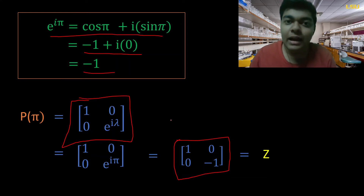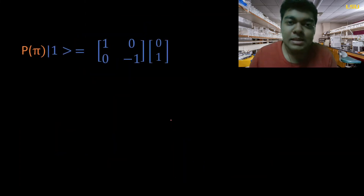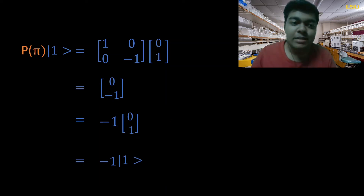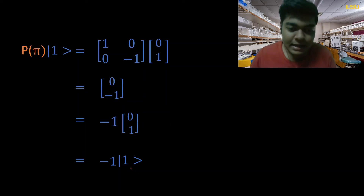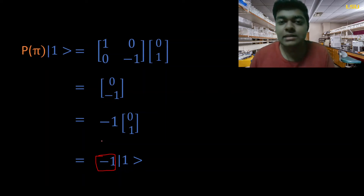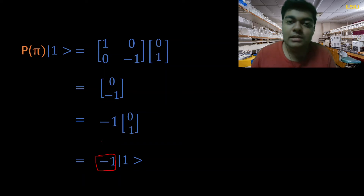Let's apply this particular gate with λ = π to |1⟩. Substituting the matrix and the vector and carrying out the matrix multiplication, what we get is -|1⟩. If you recall, this is the same result we got when applying the Z operator to |1⟩. This minus one just contributes to the global phase, and global phase has nothing to do with observable changes, so -|1⟩ is just as good as +|1⟩.